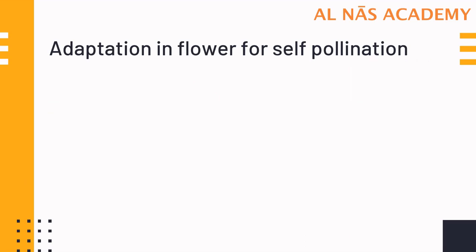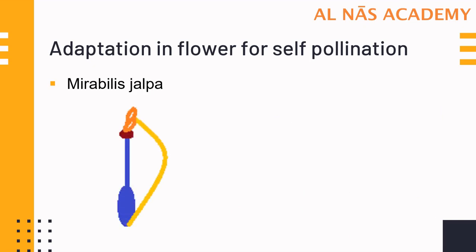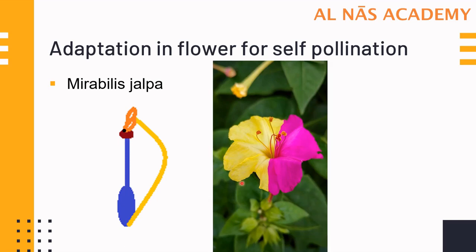Another interesting example is Mirabilis jalapa. In Mirabilis jalapa, the anther bends onto the stigma. As soon as they mature, the anther bends and touches the head of the gynoecium — the stigma — and releases its pollen onto it. You can see the anther is touching the head of the stigma. This is also an adaptation seen in self-pollinating flowers.